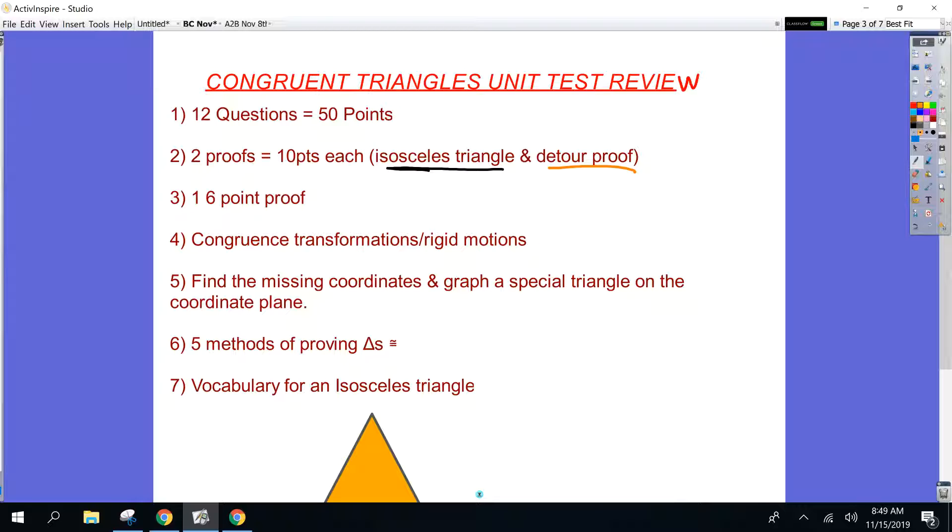And five methods of proving triangles congruent. I just want to review that with you here. Here we go. One, two, three, four. What are my five methods here? HL. HL can only be used in what type of triangles? Right triangles. So if you are doing a proof on Monday that you think involves HL, you have to tell me the right triangles before you're writing HL.